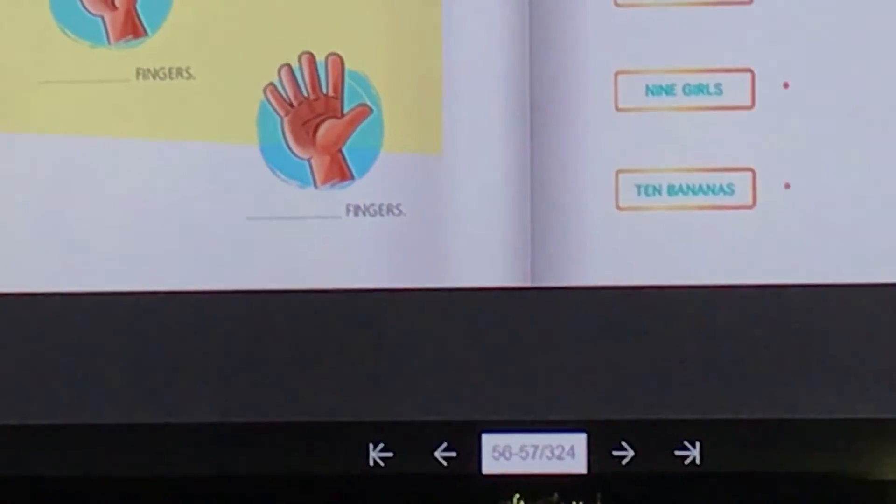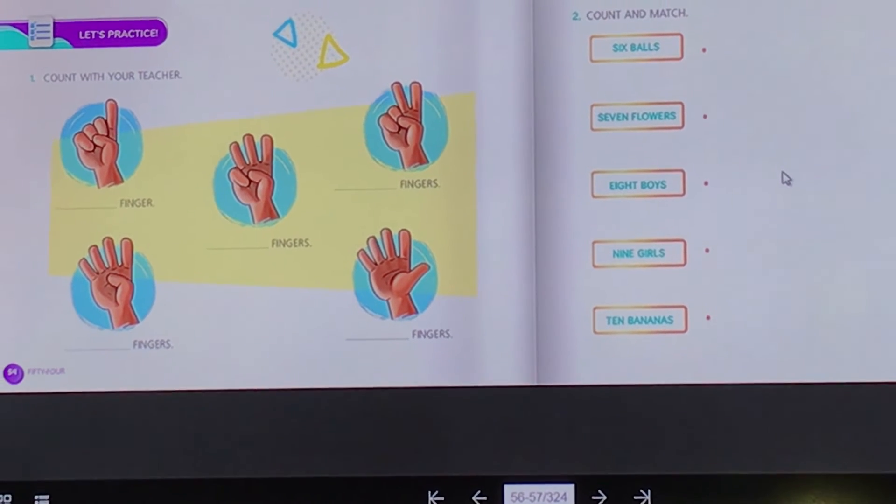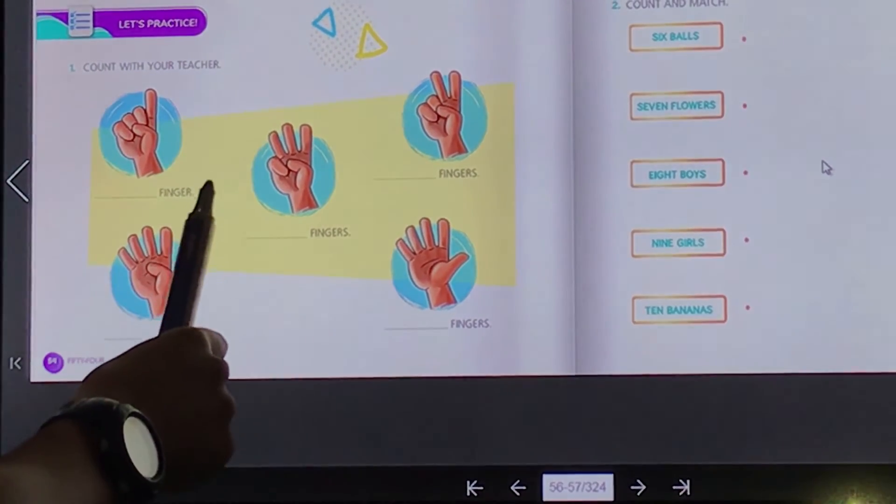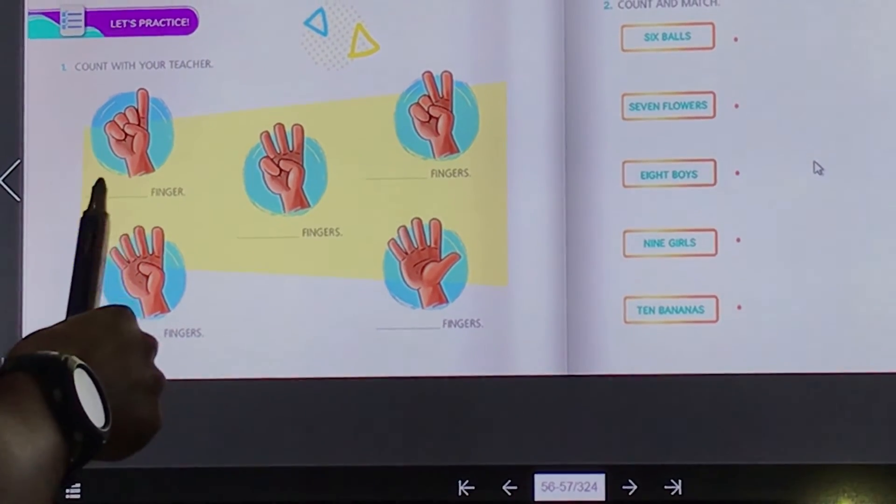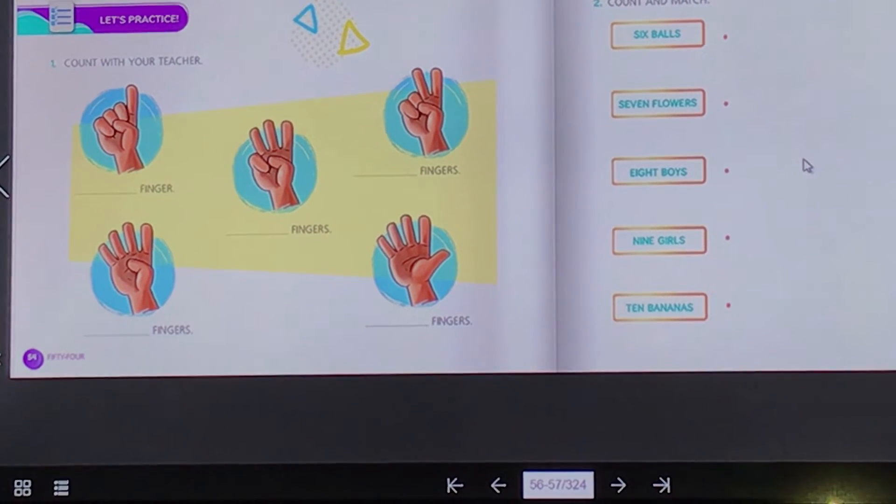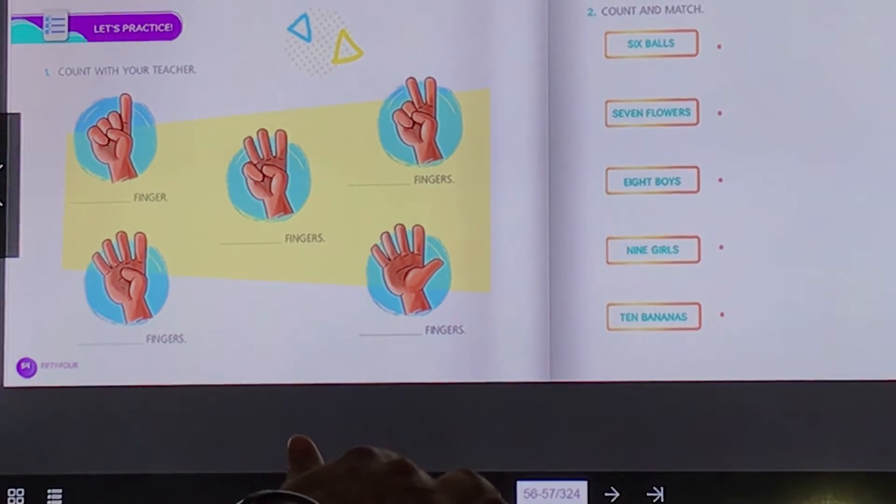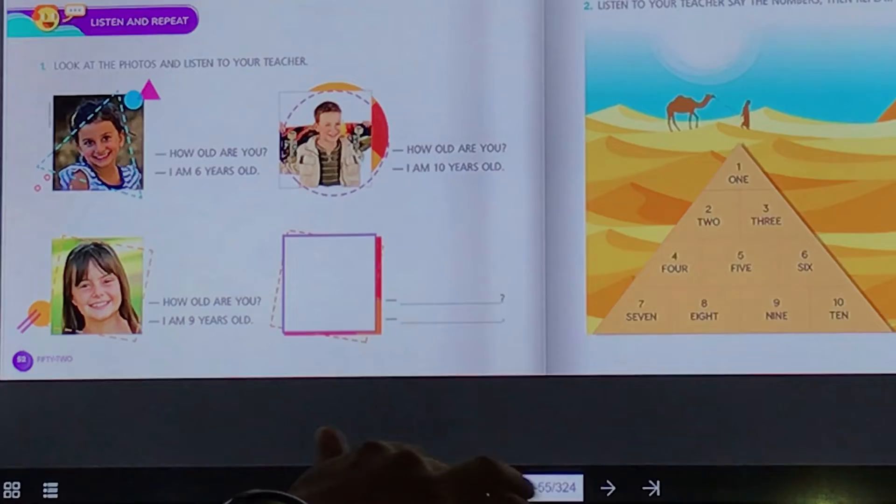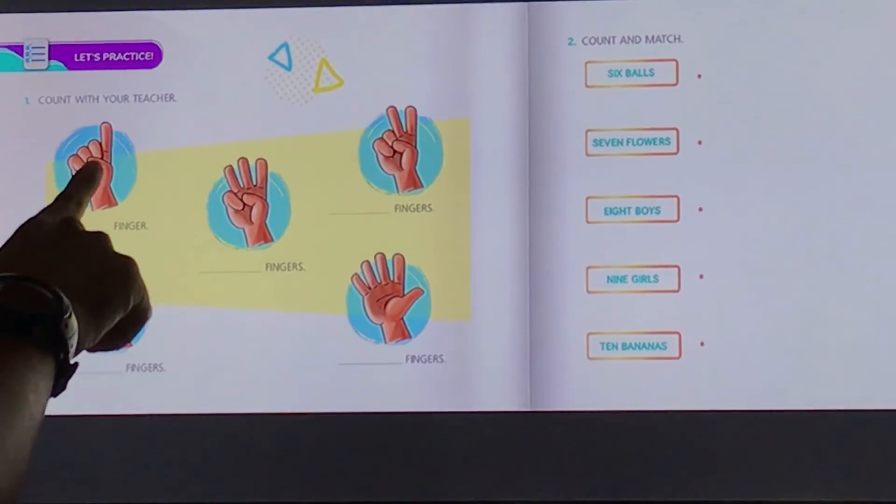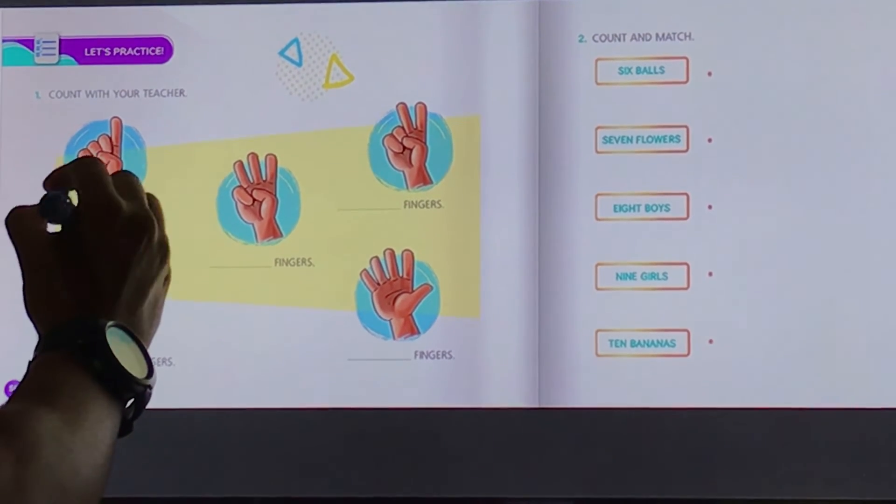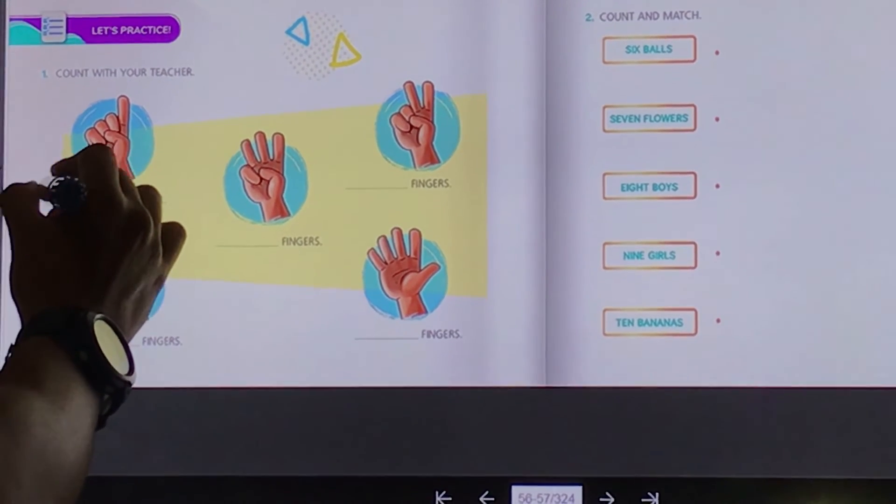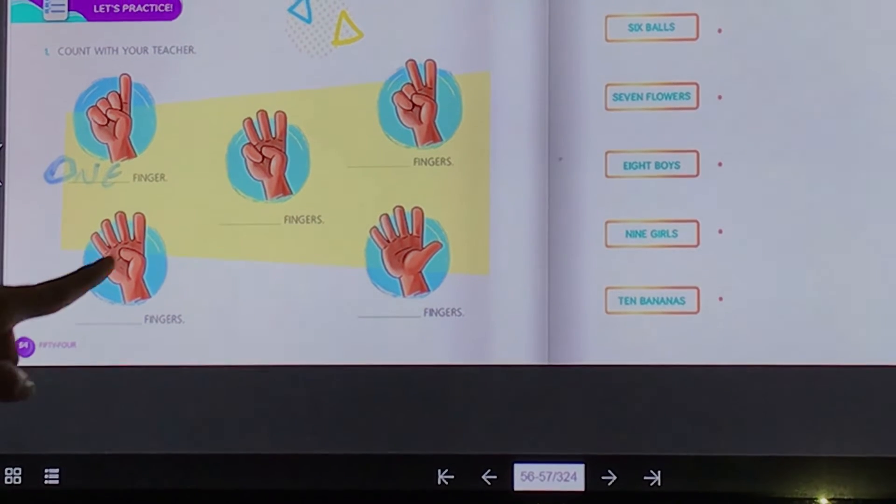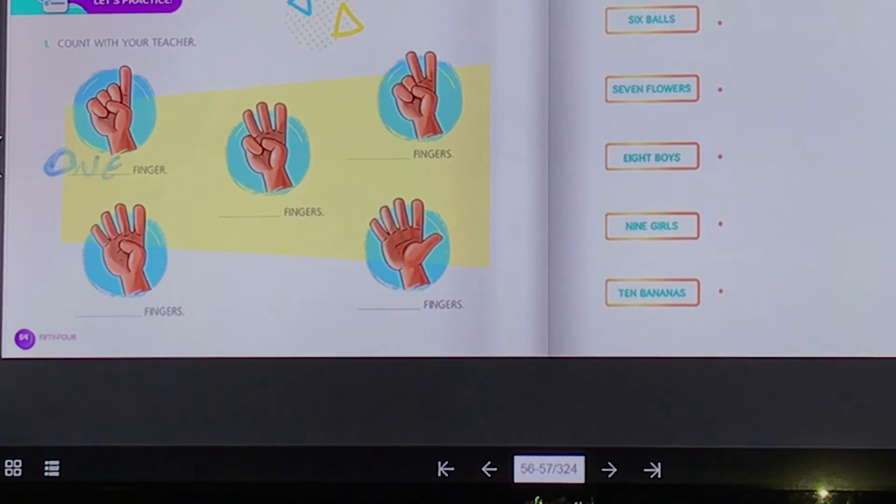All right. Let's practice more. Aqui vocês podem pausar o vídeo para completar essas atividades. Eu vou explicar como é que vocês tem que fazer. Let's practice, vamos praticar. Count with your teacher. Vamos contar, mas vocês vão contar os dedinhos que estão na figura e escrever o número aqui. Ah teacher, eu não sei como é que escreve three em inglês. Não tem problema, vocês podem voltar à página do livro. E aqui está a escrita. Não é para colocar o número, é para escrever o nome. Então, one, two, three. E aí vocês vão completar esses outros aqui. Podem pausar o vídeo e completar a atividade.